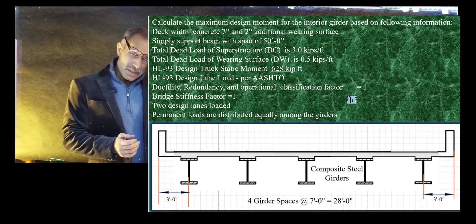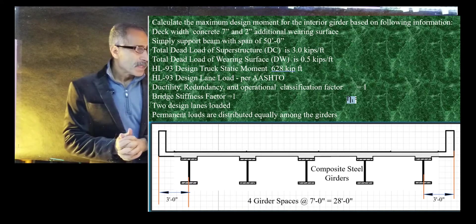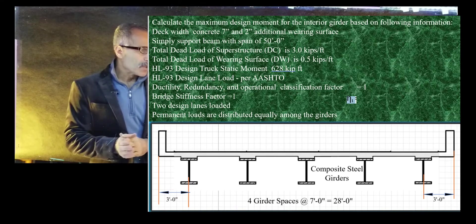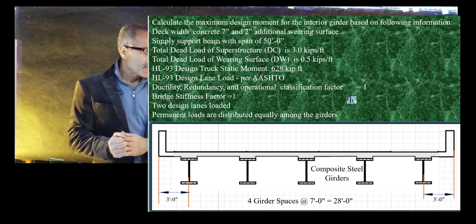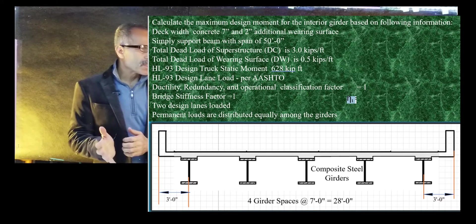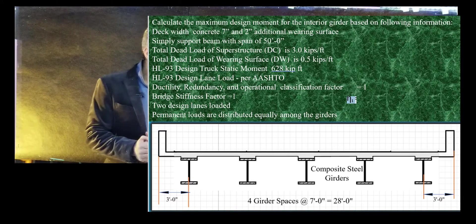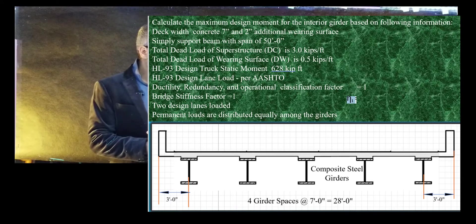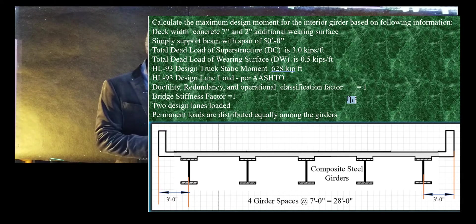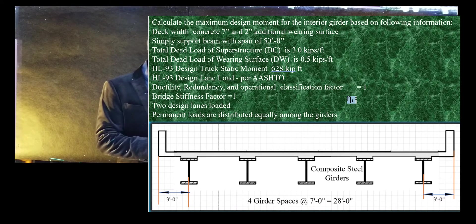Hello, welcome to bridge design. We're going to do a problem today and calculate the maximum moment for the interior girder. The bridge deck has five girders spaced seven feet apart and the outside girder is about three feet. The information given includes a dead load of three kips per foot for the concrete, a wearing surface of 0.5 kips per foot, the AASHTO lane load, and a bridge stiffness factor of one.